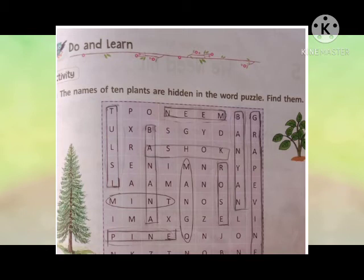Dekho yahan par aapko dikhega — Tulsi: T-U-L-S-I. Tulsi — yeh aapko circle karna hai. Phir upar pehli line mein hai Neem: N-E-E-M. So you have to circle Neem.